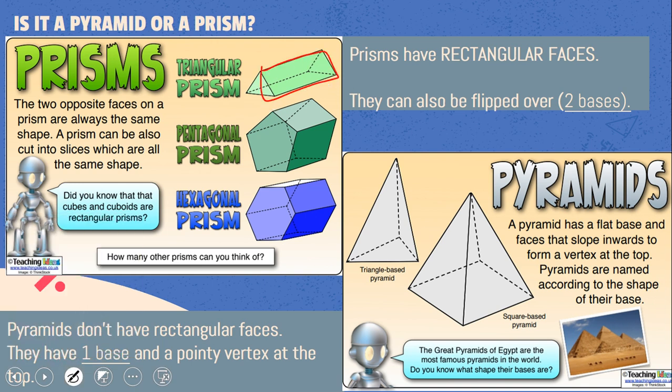So that's a rectangle, that's a rectangle, that's a rectangle. So a prism has a rectangular face, at least on the sides.